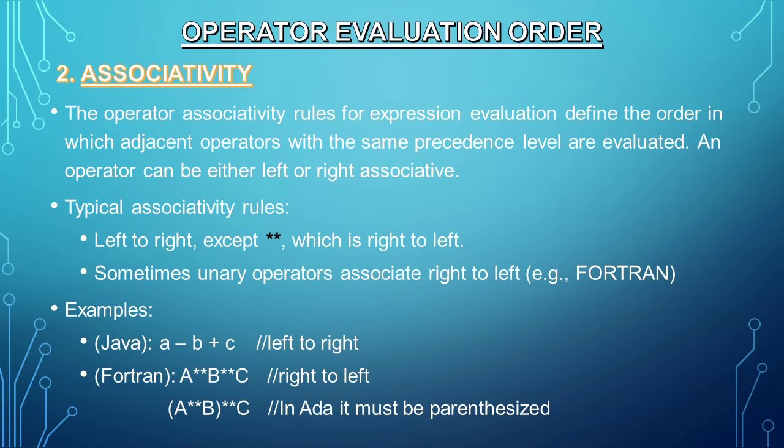The second operator evaluation order topic is associativity. Its rules for expression evaluation define the order in which adjacent operators with the same precedence level are evaluated. An operator can be either left or right associative. Typical associativity rules include left to right, except double asterisk which is right to left. Sometimes unary operators associate right to left, such as in Fortran.